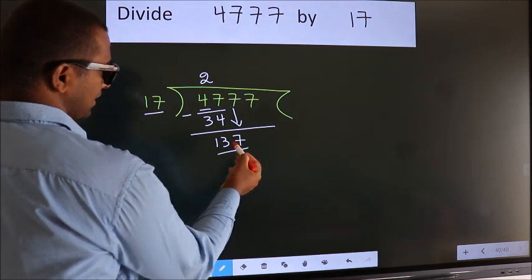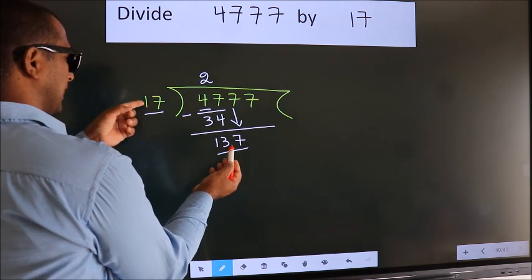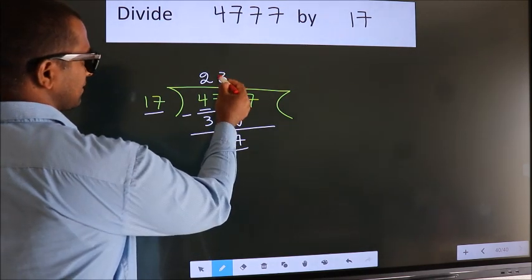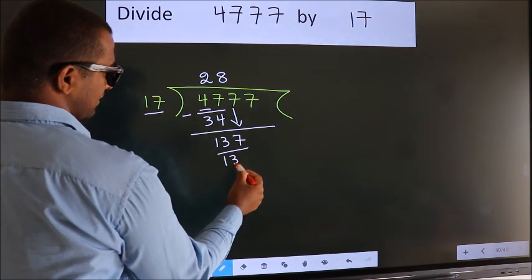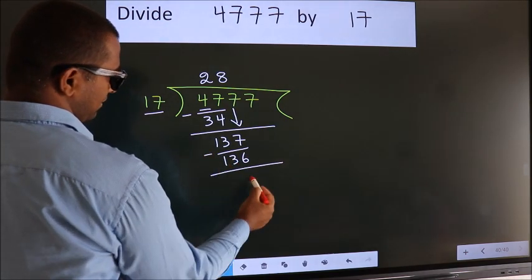So 137. A number close to 137 in the 17 table is 17 times 8, which is 136. Now we subtract. We get 1.